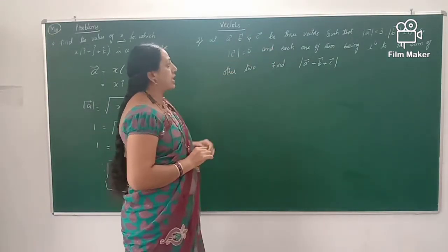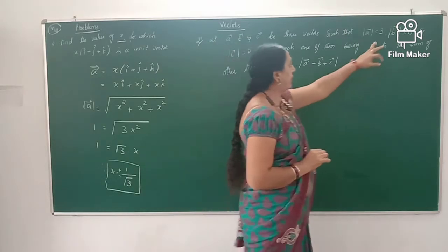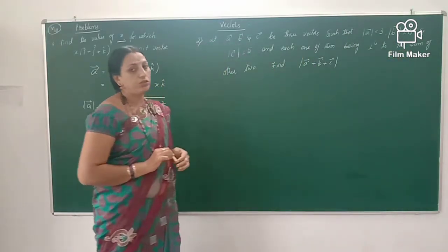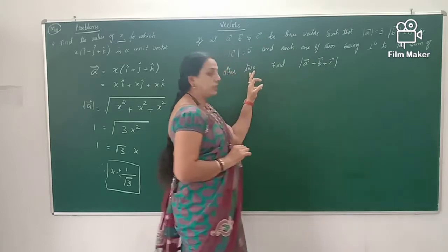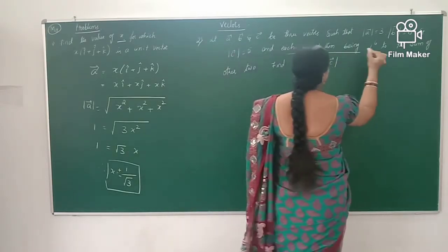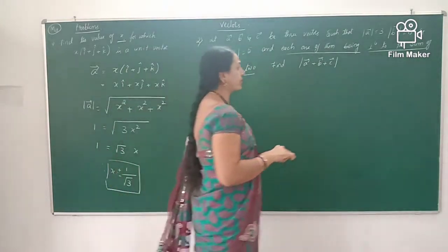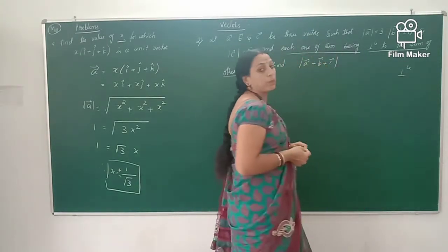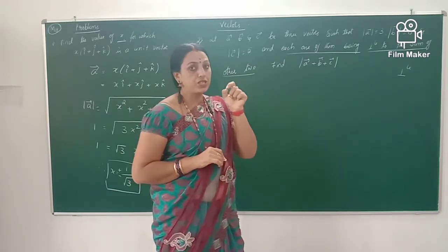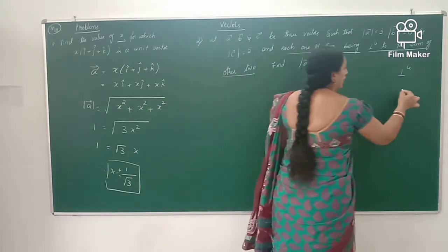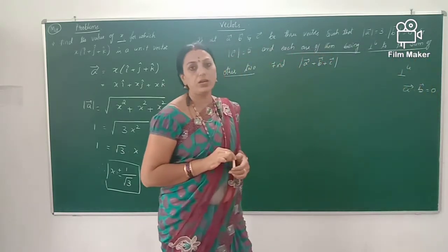Next problem: let vector a, vector b, vector c be 3 vectors such that magnitude of a is equal to 3, magnitude of b is equal to 4, and magnitude of c is equal to 5, and each one of them being perpendicular to some or other two. First we observe the condition: each one of them being perpendicular to some or other two. The condition for two vectors being perpendicular to each other is that their scalar dot product is zero.